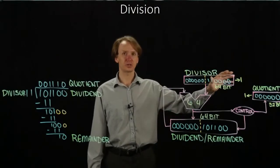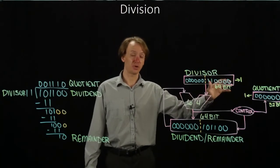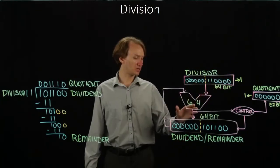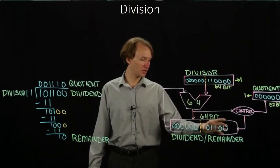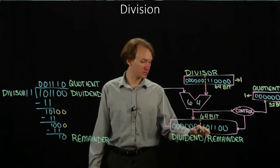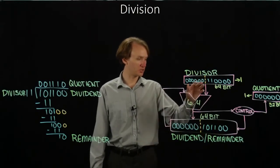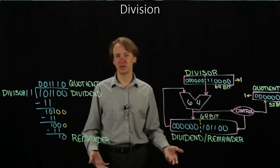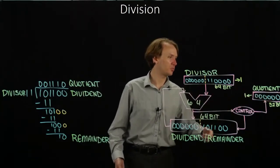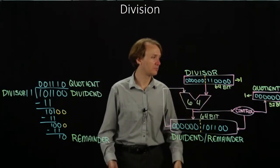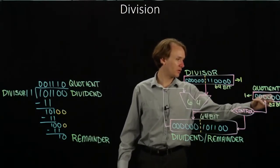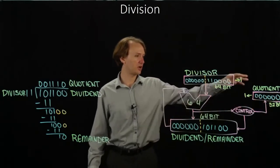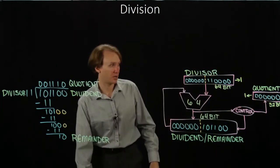Now my divisor is fully into the right-hand side of the register, so I might get to do something interesting. But when I do the subtraction, my divisor is still larger than my dividend, so I'm not going to do anything interesting — I'm just going to shift in one more zero. Now I'll have three zeros, and my divisor will shift one more bit to the right.